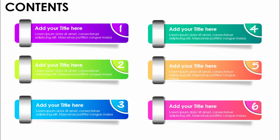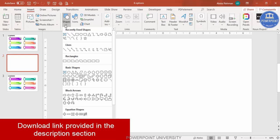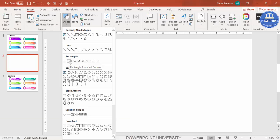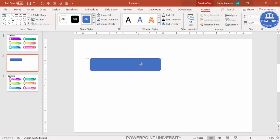Let's see how to do this in PowerPoint. Add a new slide, go to Insert, then Shapes. From the Rectangles section, select the rounded corner rectangle and draw it to your required size. For the shape outline, make it white — it's not currently visible.